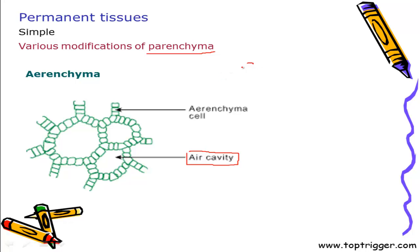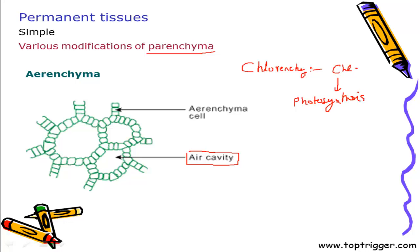Besides aerenchyma, there is another parenchyma called chlorenchyma. Chlorenchyma are parenchyma cells having chlorophyll, and their prime function is photosynthesis. By photosynthesis they form food, so it is also meant for storage of food.